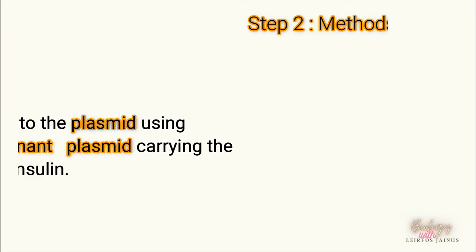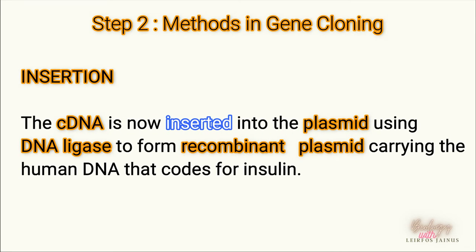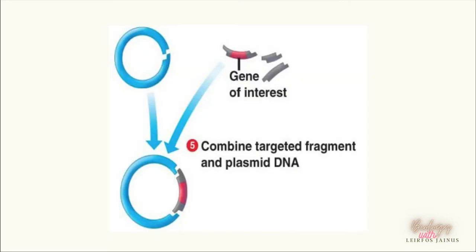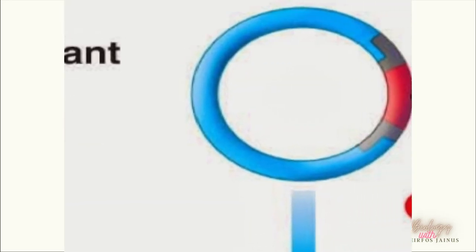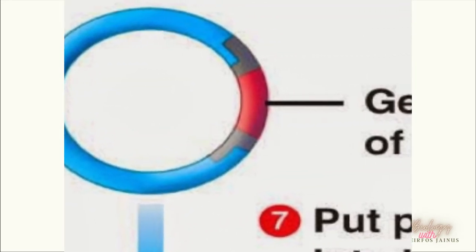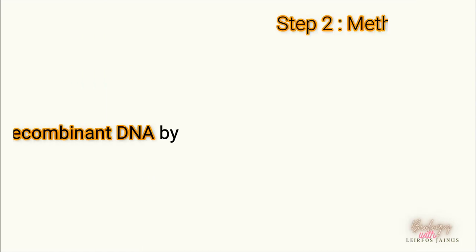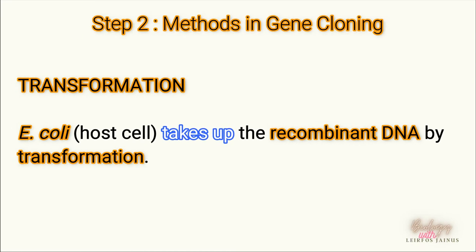The next step is insertion. During this step, DNA ligase is used to seal the phosphodiester bonds between the target gene and the plasmid. This forms the recombinant plasmid, or recombinant DNA, which contains the target gene or cDNA.